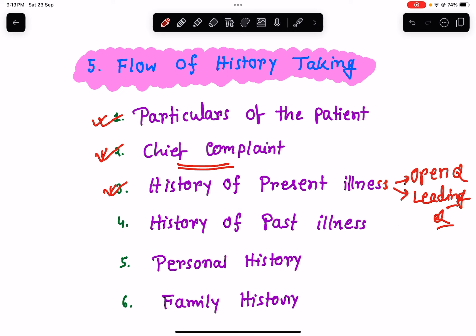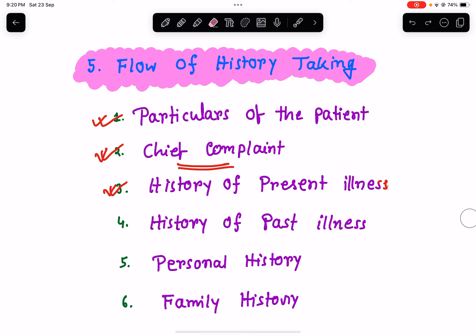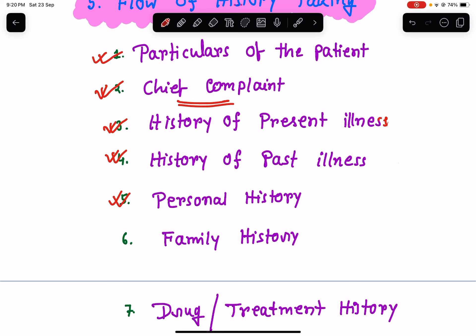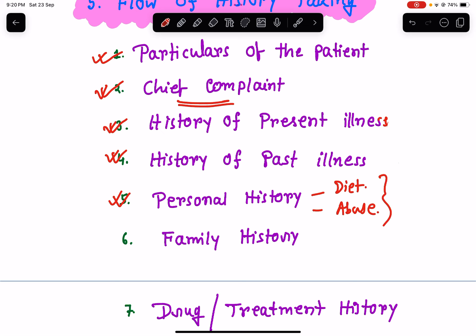After that comes history of past illness — ask about similar complaints or sufferings in the past, and any chronic illnesses. In the personal history, ask about dietary habits, any drug or medicine abuse, alcohol abuse, smoking, any recreational drug use like cocaine, and any high-risk behavior.